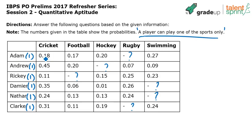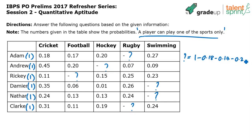The probability that Adam plays cricket is 0.18, football is 0.17, hockey is 0.20, and swimming is 0.27. The balance goes to rugby — to find it, subtract all other probabilities from 1: 1 minus 0.18 minus 0.17 minus 0.20 minus 0.27. Similarly, for Ricky, the missing value equals 1 minus the sum of his other four probabilities.